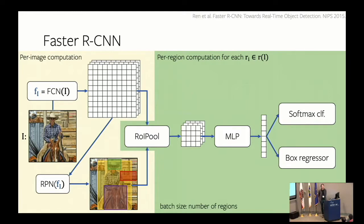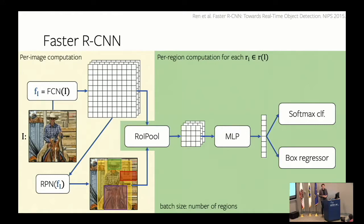NMS can fail with heavy occlusion — when two people's bounding boxes are very similar, one may be suppressed. There are smarter approaches now: you get features for all the boxes and try to figure out which ones to keep. But for the basic approach, the thresholds are usually set so that nearby but distinct people won't be suppressed.